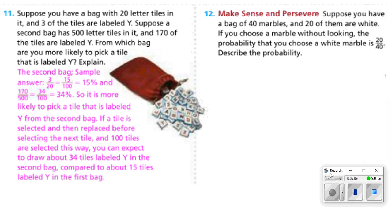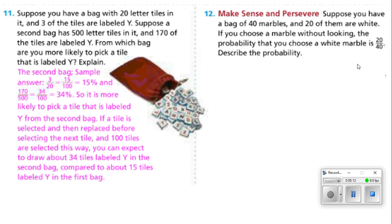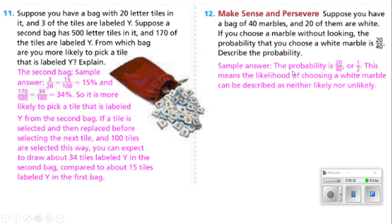We're going to number 12 now. Suppose you have a bag of 40 marbles and 20 of them are white. If you choose a marble without looking, the probability that you choose a white marble is 20 out of 40. Describe that probability. Well, 20 divided by 40 is going to give me 0.5 and that's about a 50% chance. The probability is 20 out of 40 or one half. This means the likelihood of choosing a white marble can be described as either or neither likely or unlikely. Since it's a 50-50 chance, you can't say that it's likely you're going to get a white marble or unlikely. You have an equal chance of getting a white marble or a marble that is not white.